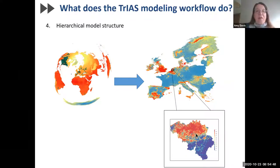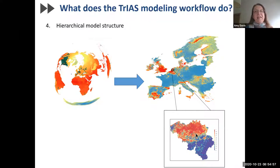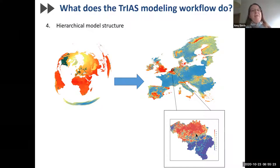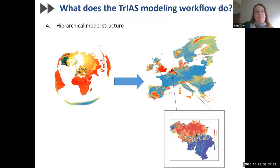The fourth thing our workflow automatically does is use a hierarchical model structure where we first characterize the niche of the alien invader at the global scale and then fine-tune this with climate and habitat data specific for Europe. The climate data was provided by the Royal Meteorological Institute of Belgium and has the advantage of being based on regional climate models as opposed to global climate models, providing more reliable forecasts of climate change for Europe. The risk maps for Belgium are then extracted from the risk model for Europe.